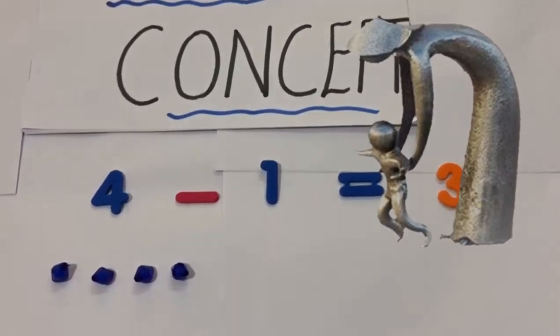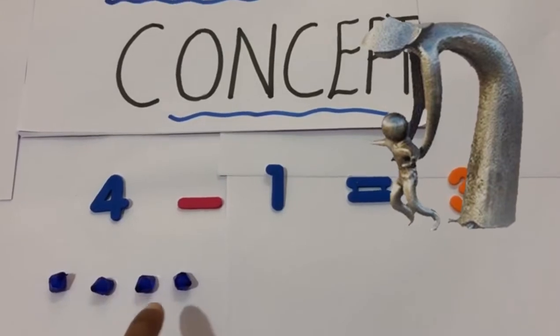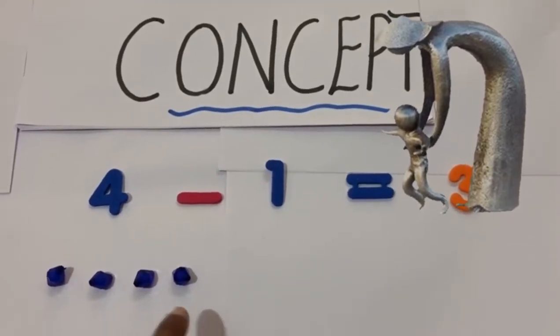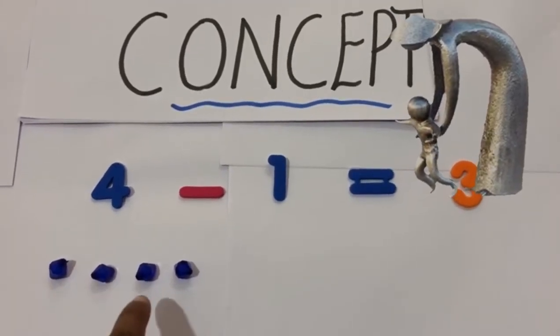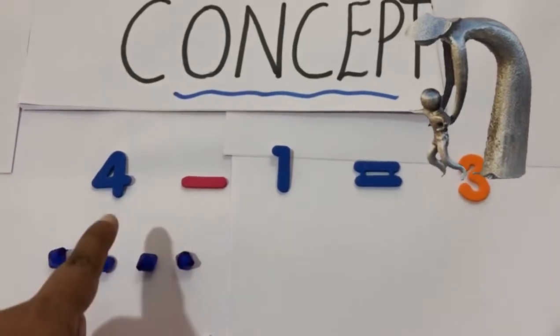Here the child should be able to identify the objects or the item placed, count them 1, 2, 3, 4, and place the number there.